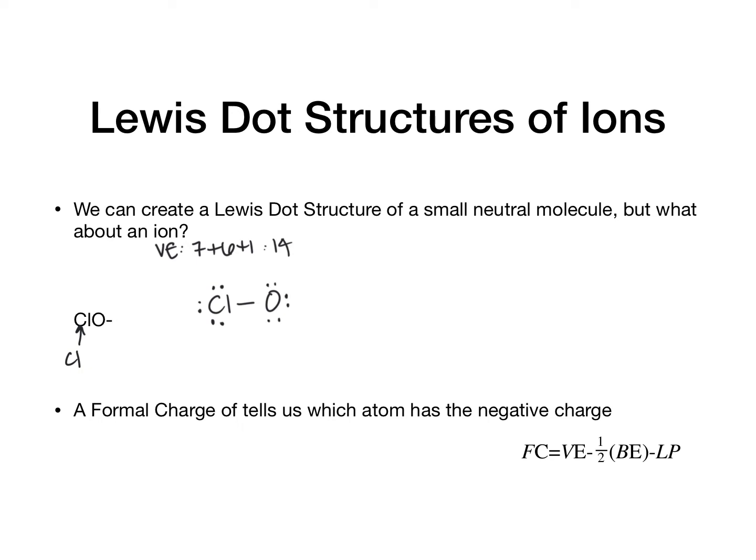So now both of these elements have octet, but which one of them owns the negative charge? CLO minus has a negative charge — is it that they both equally share that, or is one of these two atoms more negative? We're going to use something called the formal charge, and it tells us who has the negative charge or a positive charge. The equation is: formal charge equals the number of valence electrons minus half of the bonding electrons minus all of the lone pairs.